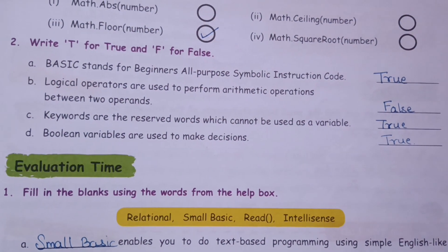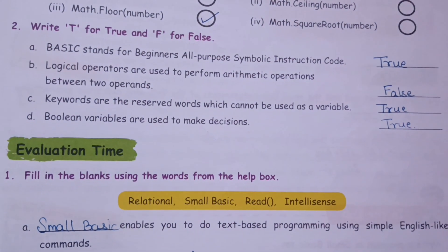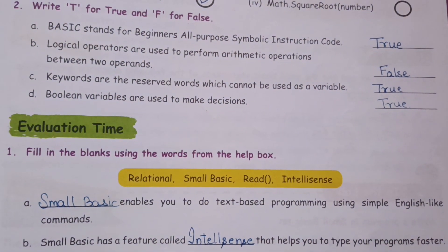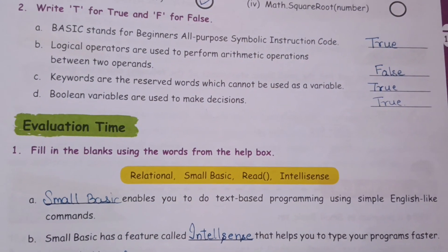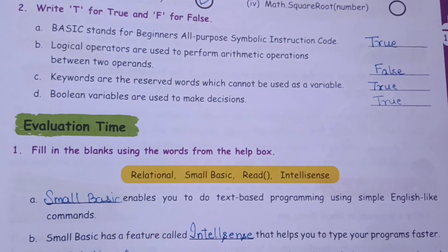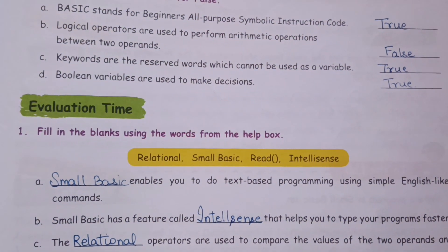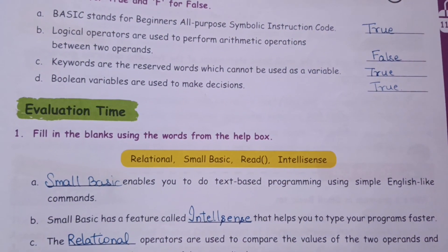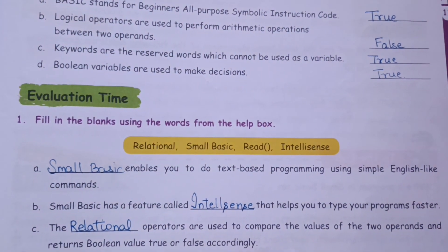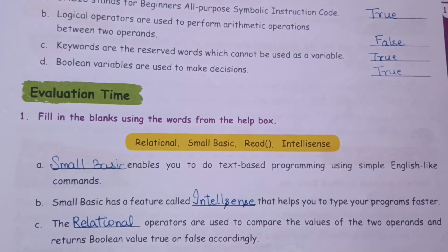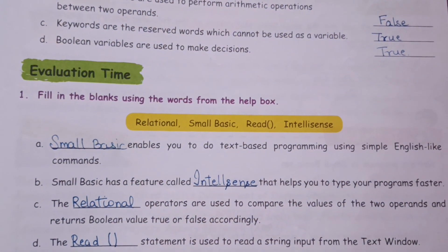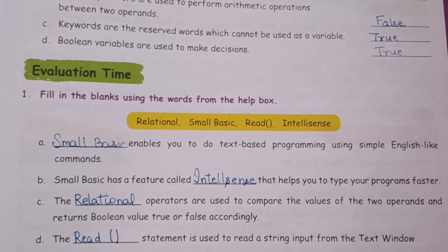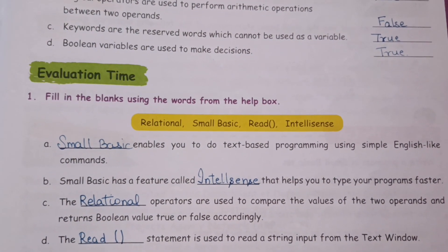Now, evaluation time: Fill in the blanks using the words from the help box. Small Basic enables you to do text-based programming using simple English-like commands. Small Basic has a feature called IntelliSense that helps you type your programs faster. The relational operators are used to compare the values of the two operands and return a boolean value of True or False accordingly. The Read statement is used to read a string input from the text window.